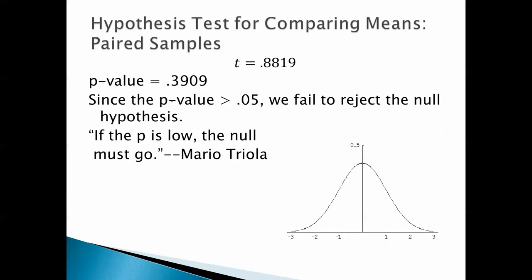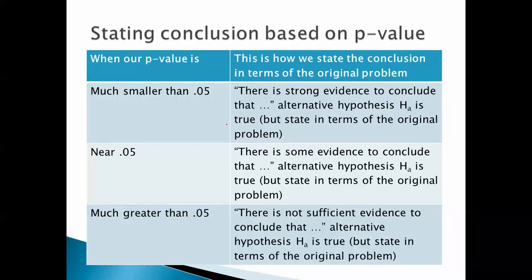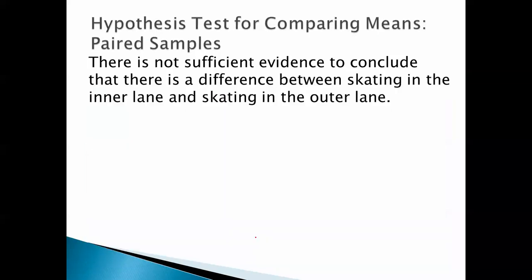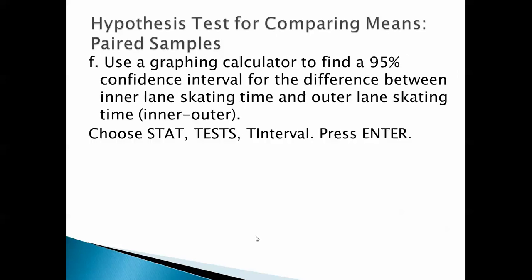The p-value is 0.3909. Since the p-value is greater than 0.05, we fail to reject the null hypothesis. And when our p-value is much greater than 0.05, we say there's not sufficient evidence to conclude that the alternative hypothesis is true. So we say there is not sufficient evidence to conclude that there's a difference between skating in the inner lane and skating in the outer lane.